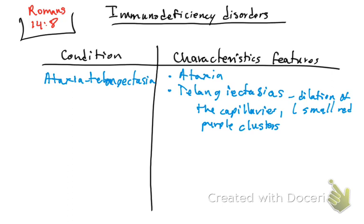That is telangiectasia. Now, what is ataxia? Ataxia is basically when there is a lack of muscle coordination, and it may affect speech and movements. So ataxia is a lack of muscle coordination.